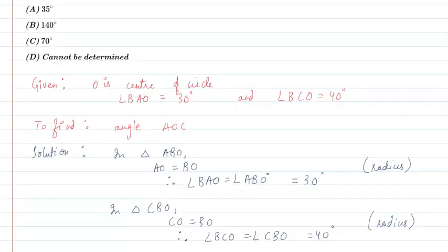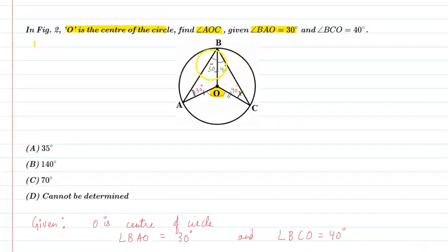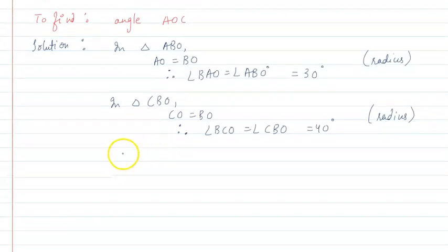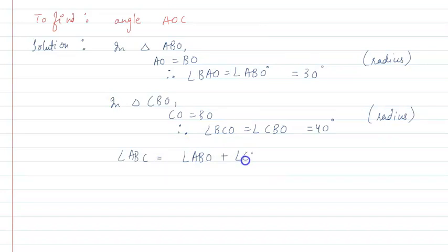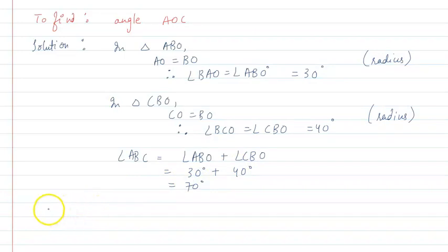Since angle ABO equals 30 degrees and angle CBO equals 40 degrees, angle ABC equals angle ABO plus angle CBO, which is 30 degrees plus 40 degrees, giving angle ABC equal to 70 degrees.